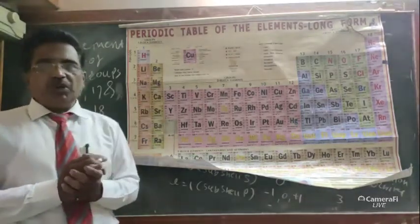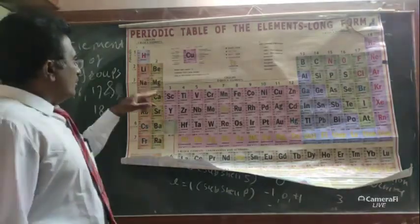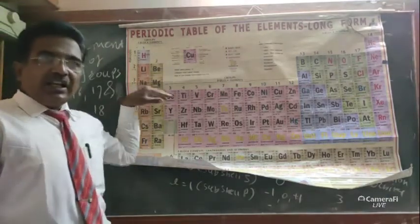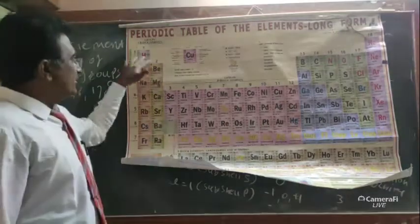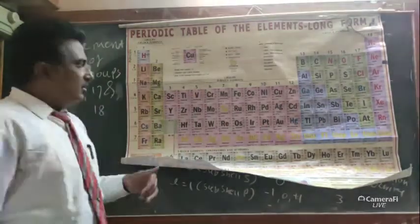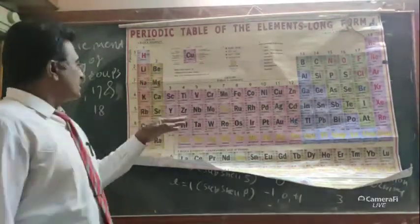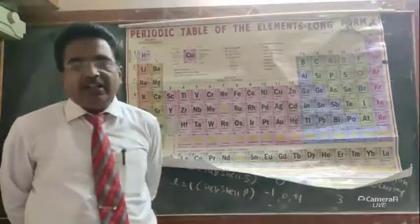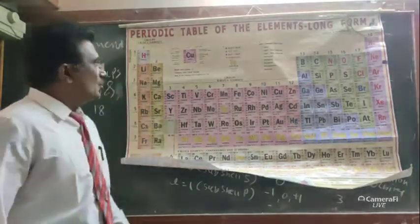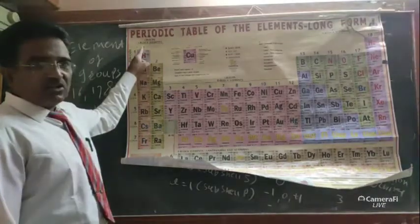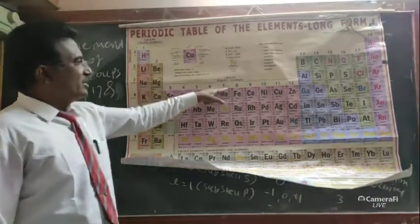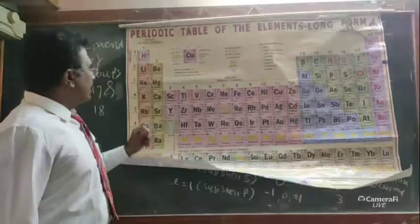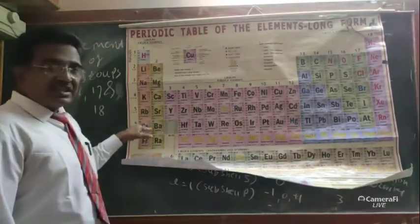In the periodic table, there are groups and periods. Horizontal lines are termed as periods, and vertical columns are termed as groups. There are 7 periods and 18 groups in the periodic table.